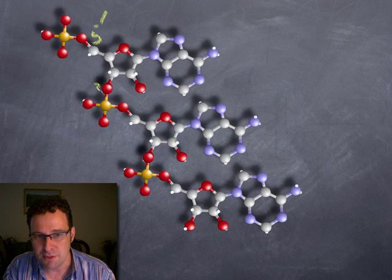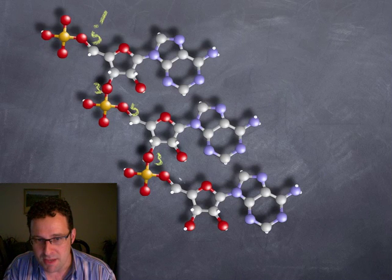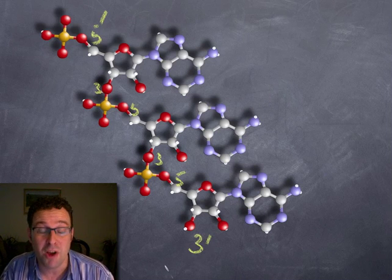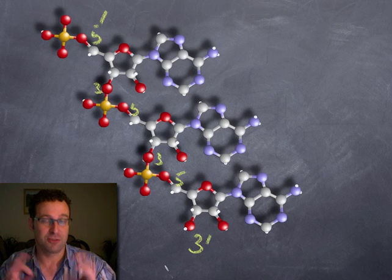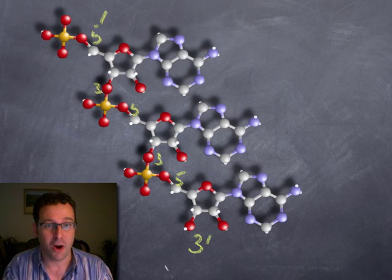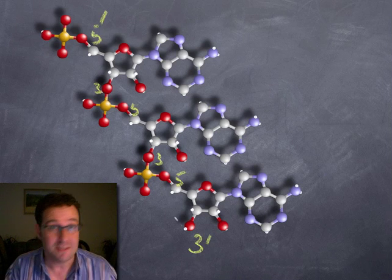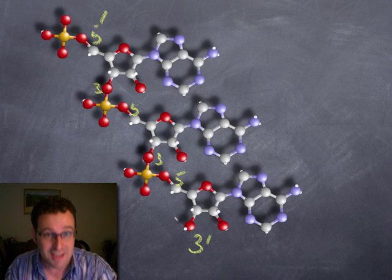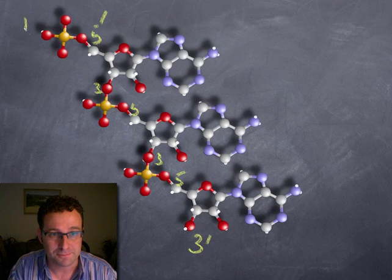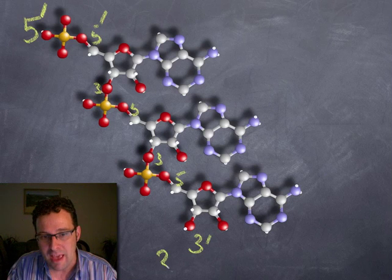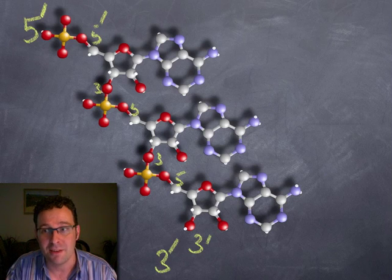Then this here is the 3-prime end. That phosphate there is attached to the 5-prime end. There's a 3-prime end. There's the 5-prime end of the next one. And then sticking down the bottom here is the 3-prime end, which gives us a 3-prime end of that whole chain. So we would say that this whole chain of nucleotides, this strand of DNA, this is the 5-prime end of it, and that's the 3-prime end of it.